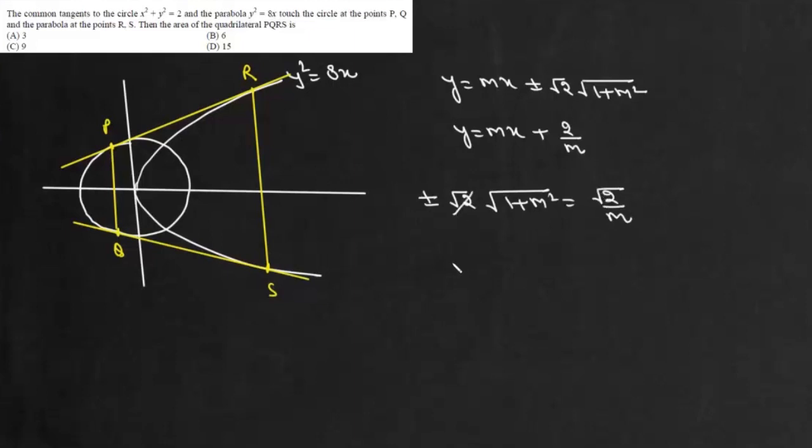So it will be this root 2 and we square it. We can write m to the power 4 plus m squared minus 2 equals 0 or m squared plus 2 into m squared minus 1 equals 0. So value of m is plus or minus 1.